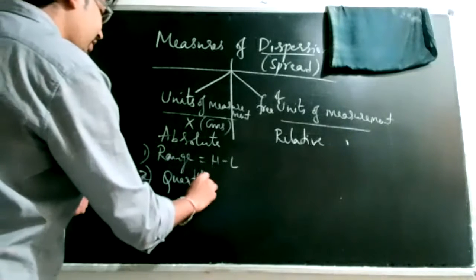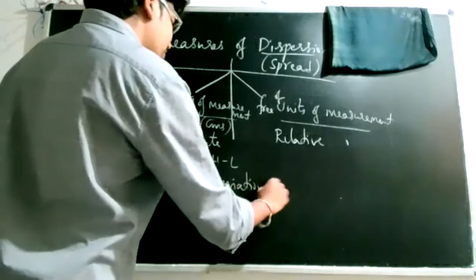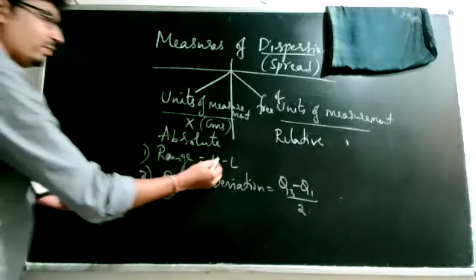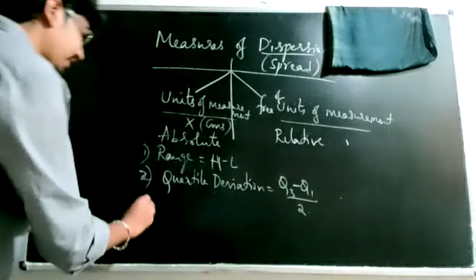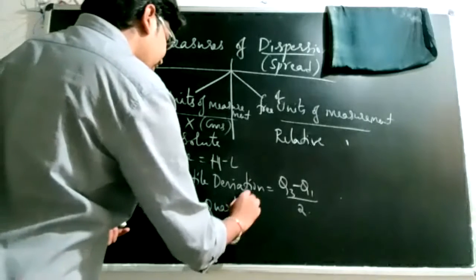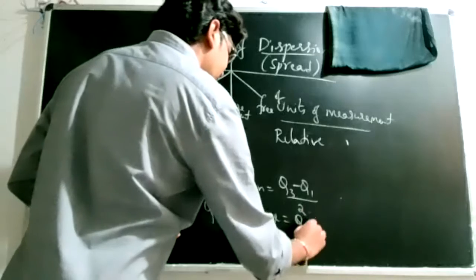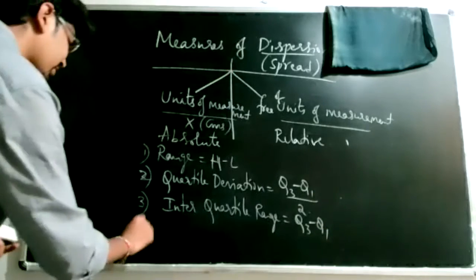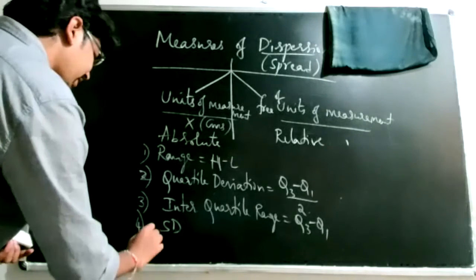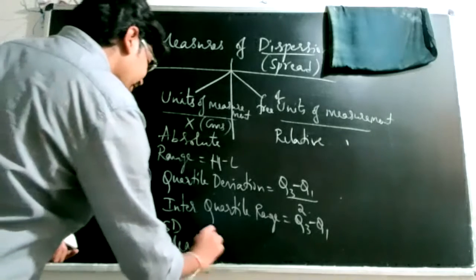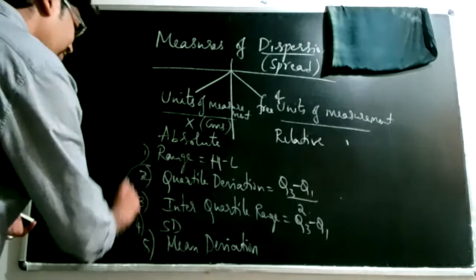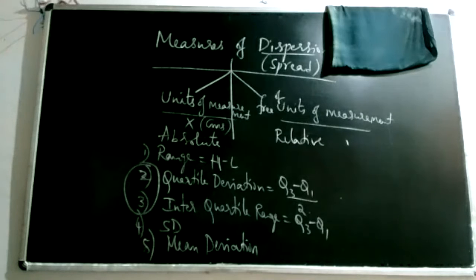We also have the concept of quartile deviation, which is based on quartiles. When we have extreme values in the data, instead of looking at the extreme high and low values, we deal with only the middle 50 percent of the data. The range then becomes Q3 minus Q1, called interquartile range, and half of this is called quartile deviation. Standard deviation and mean deviation or average deviation also fall into this category of measures.